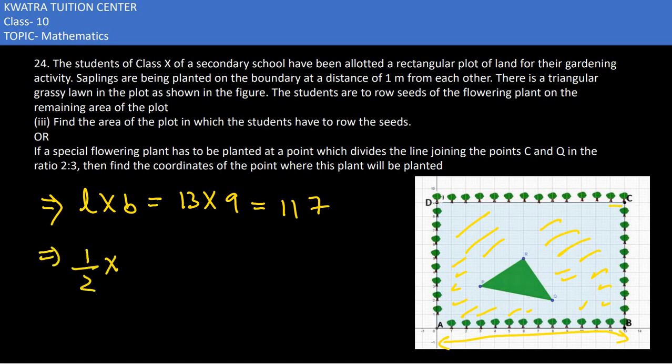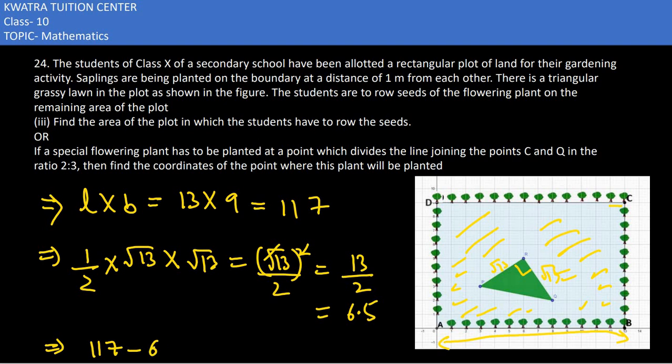Now subtract the area of triangle, which is half into base into height. The base can be root 13 as we calculated. This is a right angle triangle, isosceles and right angle. Root 13 times root 13 is root 13 squared over 2, which is 13 over 2, that's 6.5. If we subtract from 117, we get the answer as 110.5 meter square.